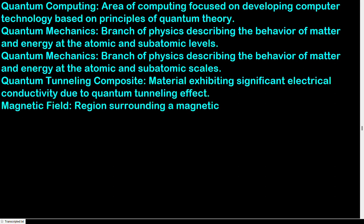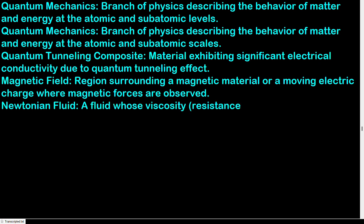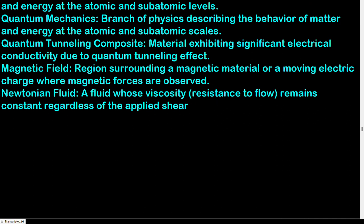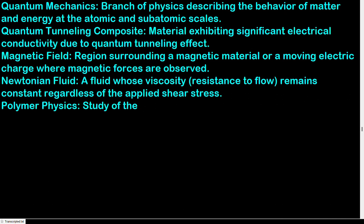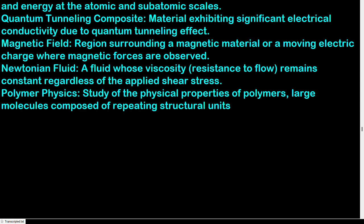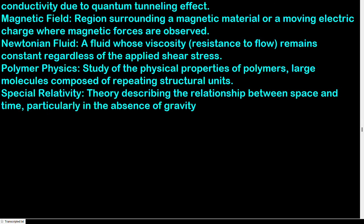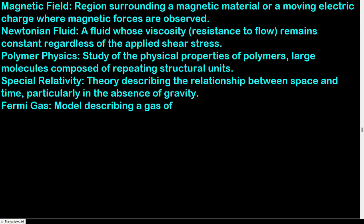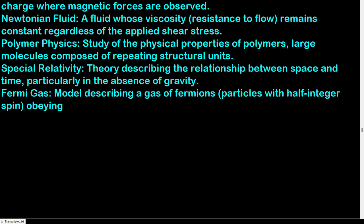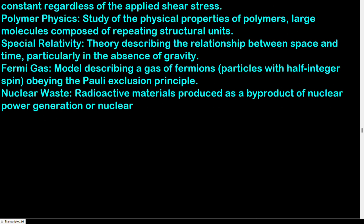Magnetic field: region surrounding a magnetic material or moving electric charge where magnetic forces are observed. Newtonian fluid: a fluid whose viscosity remains constant regardless of the applied shear stress. Polymer physics: study of the physical properties of polymers — large molecules composed of repeating structural units. Special relativity: theory describing the relationship between space and time, particularly in the absence of gravity. Fermi gas: model describing a gas of fermions — particles with half-integer spin obeying the Pauli exclusion principle. Nuclear waste: radioactive materials produced as a by-product of nuclear power generation or nuclear weapons production.